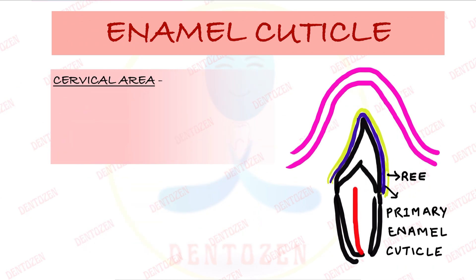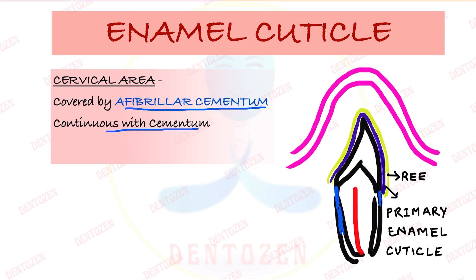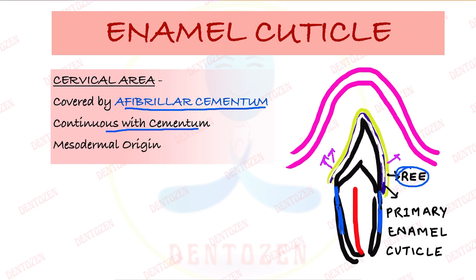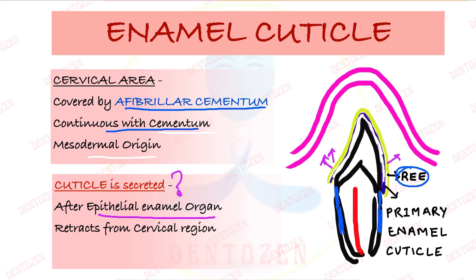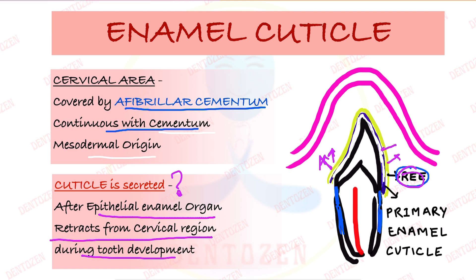In the cervical area we have acellular fibrillar cementum, which is a continuation of the cementum on the root. When the enamel organ — with ameloblasts and other layers — retracts from this cervical region, a space is created. Cementum is mesodermal in origin. When the epithelial enamel organ retracts from the cervical region during tooth development, the reduced enamel epithelium then secretes the primary enamel cuticle over the crown.